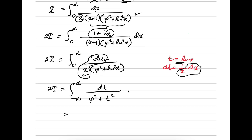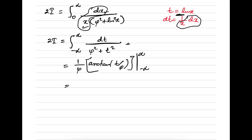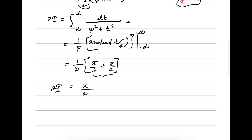We know this standard integral evaluates to 1 over phi times arctan of t over phi, evaluated from minus infinity to infinity. Applying the limits: arctan of infinity is pi over 2, and arctan of minus infinity is minus pi over 2, so we get 1 over phi times pi, meaning pi over phi equals 2 times i. Therefore i equals pi over 2 phi. This is the answer. If you like this type of video, please subscribe to the channel. Thank you for watching.